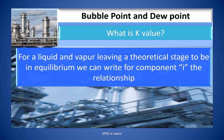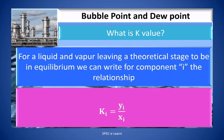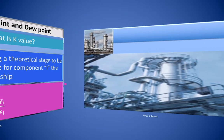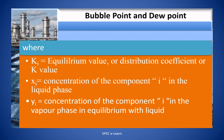For a liquid and vapor leaving a theoretical stage to be in equilibrium, we can write for component i the following relationship: Ki equal to Yi divided by Xi. Where Ki is the equilibrium value, or distribution coefficient, or simply the K value. Xi is the concentration of component i in the liquid phase, and Yi is the concentration of component i in the vapor phase in equilibrium with the liquid.